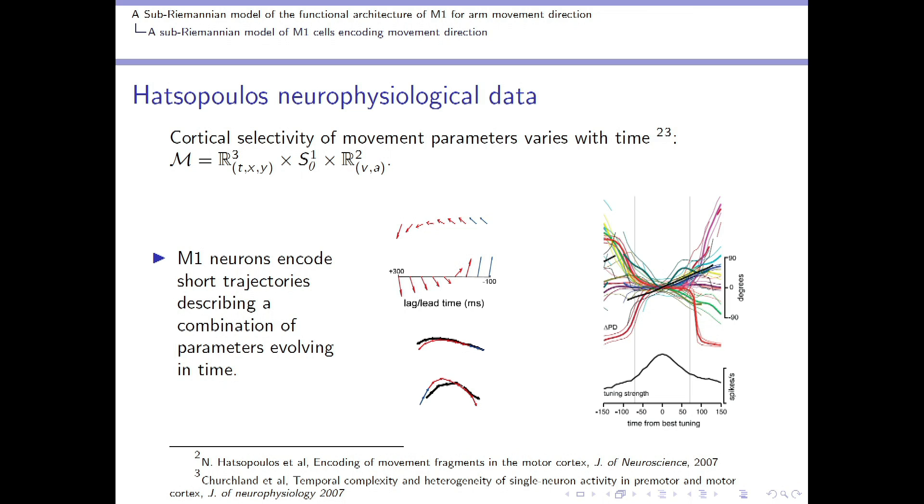There exists a time window of the order of 400 milliseconds for which neurons are coding for a movement direction varying in time. Hatsopoulos stated that M1 neurons code for short trajectories of movements, also called movement fragments. On the right, it is shown the analogous continuous graph of the arrows moving here, where on the x-axis there is time, and on the y, the degrees of each movement direction.